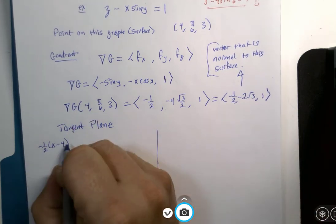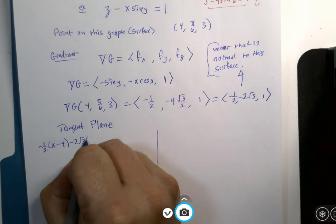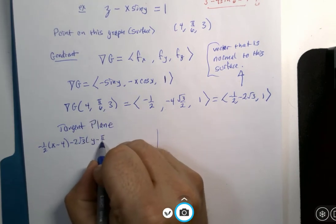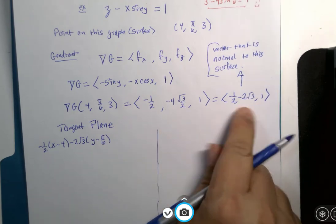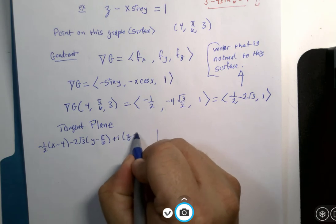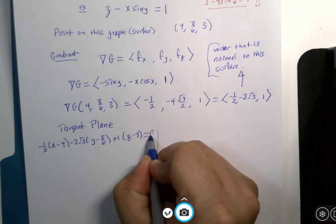minus 2√3, y minus, I need a y coordinate, that's π/6. And z component of the vector is 1, and I need a z coordinate, z minus 3, and the whole thing equals zero.